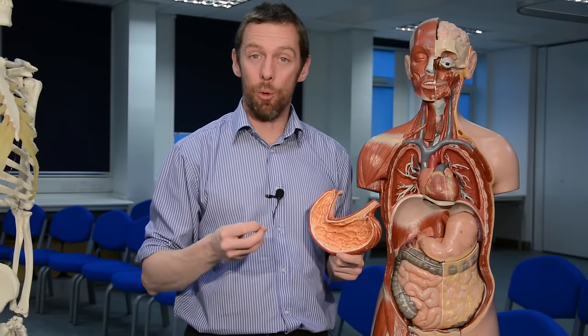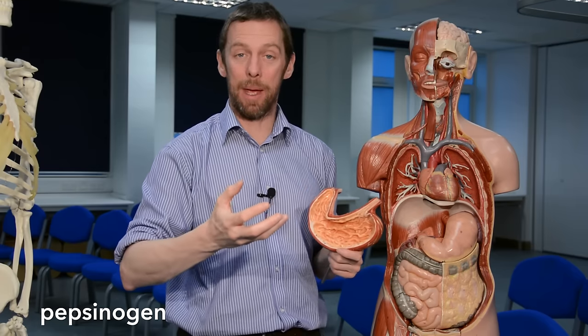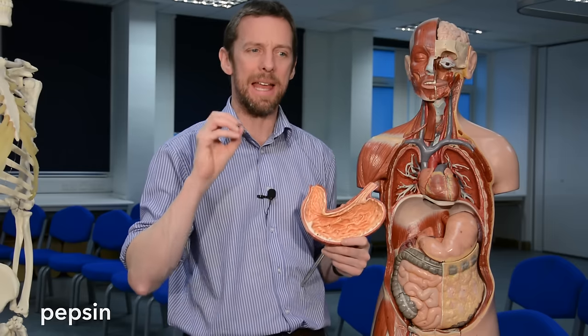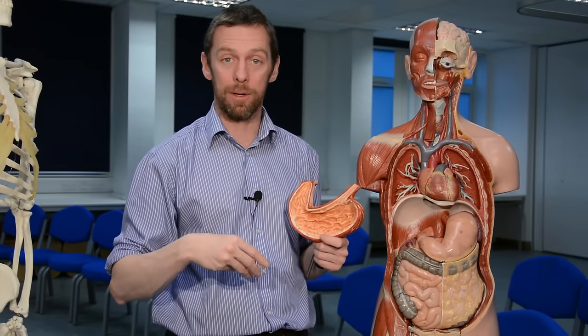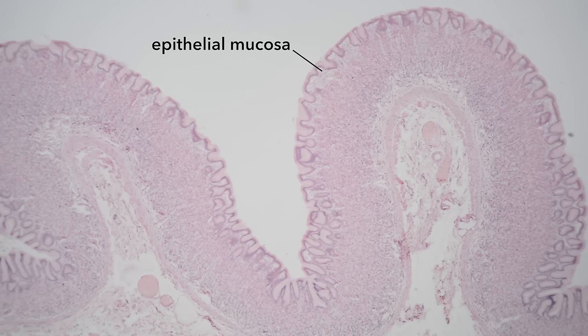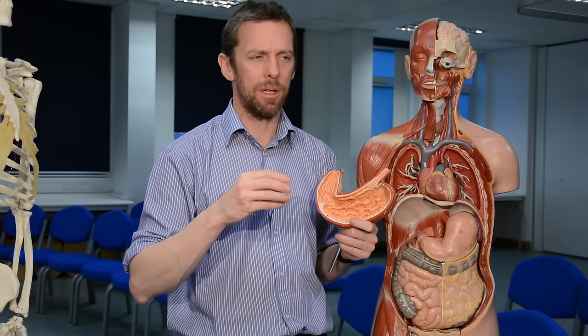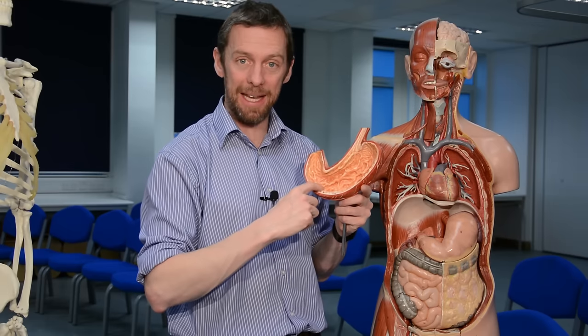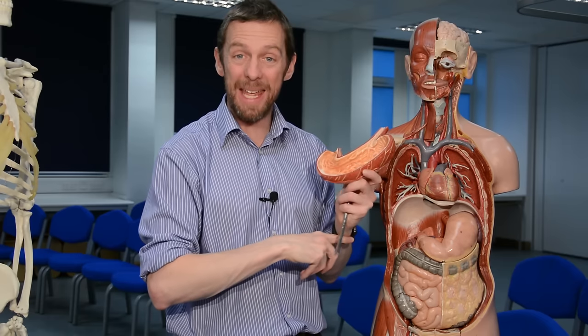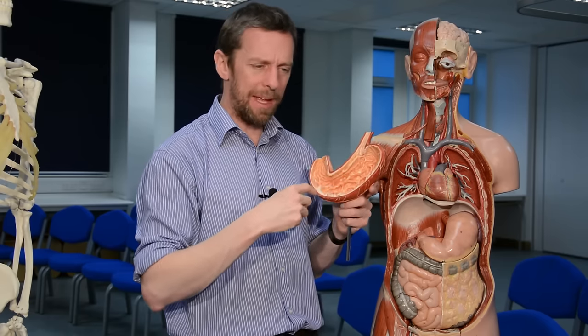The parietal cells are also making that intrinsic factor. We have chief cells also in the gastric glands, which make pepsinogen. What we're trying to do here is something quite dangerous — we're trying to denature and digest proteins, and we are made of proteins. The chief cells make an inactive form called pepsinogen, and the hydrochloric acid activates it into pepsin, a protease which can start denaturing proteins. The acidic environment also denatures proteins, starting digestion, and kills some bacteria — but that acid is also dangerous to the epithelial cells lining the stomach.